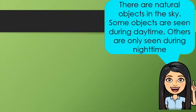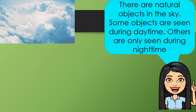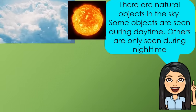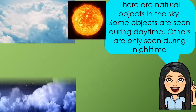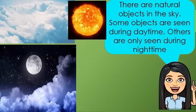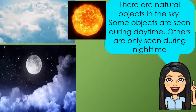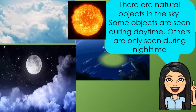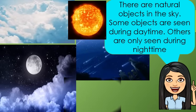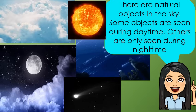There are natural objects in the sky. Some objects are seen during daytime. Others are only seen during nighttime. During daytime, we see the clouds and sun. During nighttime, the moon is clearly visible together with the stars, clouds, meteors, comets, and planets.